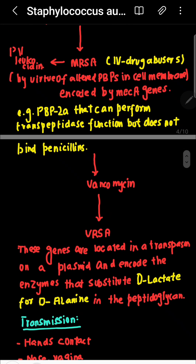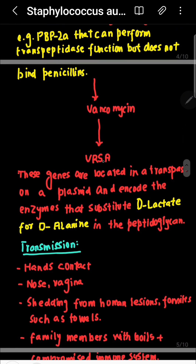For MRSA, we use vancomycin. However, there are also strains that are vancomycin-resistant Staphylococcus aureus (VRSA). In VRSA, genes located on a transposon and a plasmid encode enzymes that substitute D-lactate for D-alanine in the peptidoglycan.